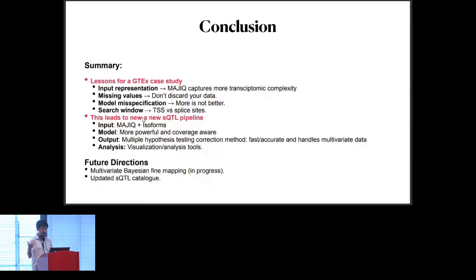In summary, we have four key takeaway lessons here from this GTEx case study. We need to improve your input representation. You need to account for the missing values. Model misspecification is really important. More SQTLs found is not necessarily better. And searching in the right place is also quite important. All of these lessons from this case study then lead us to develop new methods, which take the form of improved input representation, coverage-aware models that are more powerful, output that handles multivariate hypothesis, multiple hypothesis testing correction. And then finally, analysis and downstream visualization tools. Some future directions we're thinking about here: multivariate Bayesian fine mapping, work in progress, and improving the GTEx catalog by using our approach to potentially find more true positive SQTLs.